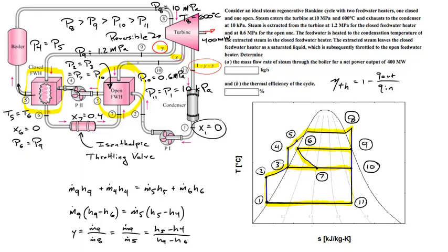Remember your energy and mass balances, and recognize these different relationships — how pressures and temperatures relate throughout the process. Since this is an ideal turbine, the entropy at streams 9, 10, and 11 has to equal the entropy at stream 8. Eventually you'll find Q_in (heat added to the boiler) and Q_out (leaving the condenser). At that point you can do an overall energy balance: Q_in has to equal work out plus Q_out.